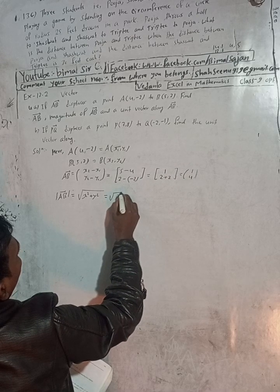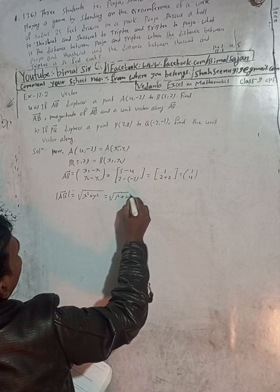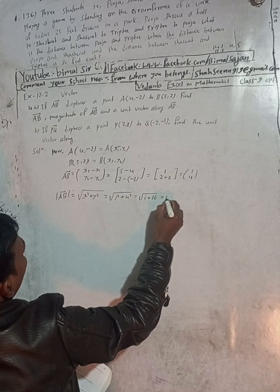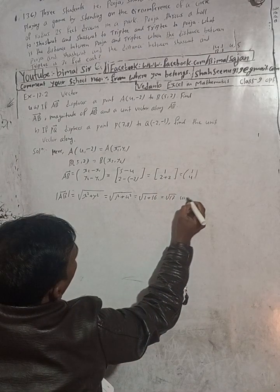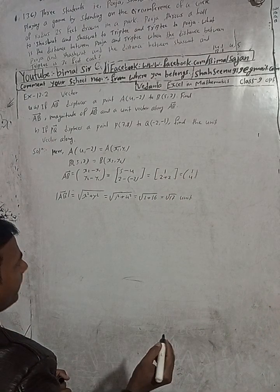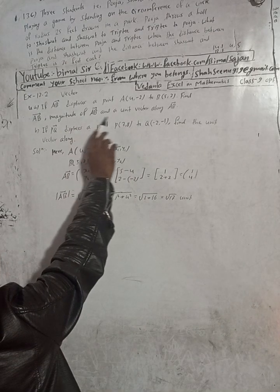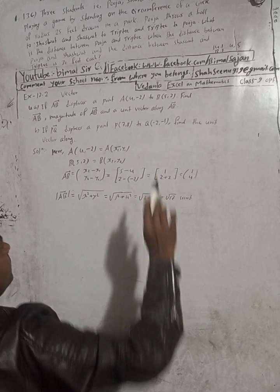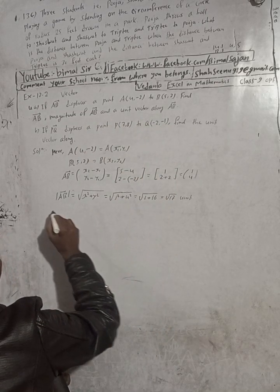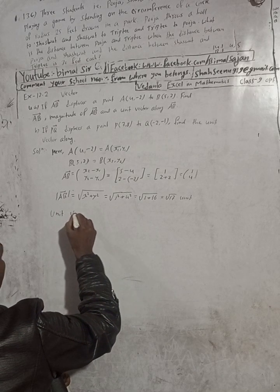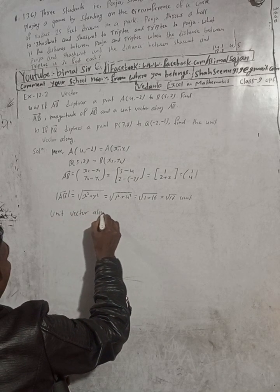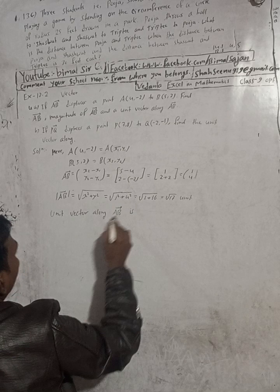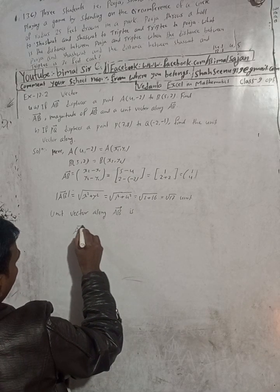The magnitude of AB vector is equal to root under x squared plus y squared. That is root of 1 squared plus 4 squared, which equals root of 1 plus 16, giving us root 17.